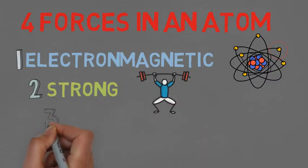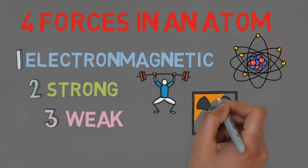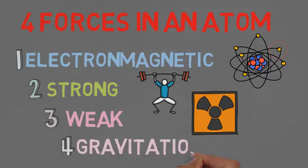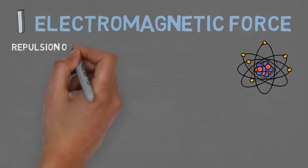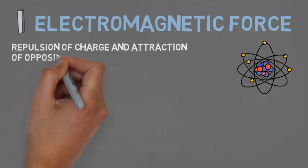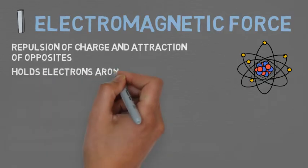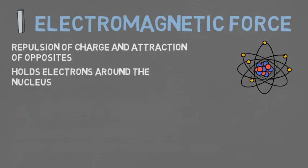Firstly, we will look at the electromagnetic force, which combines the effects of electrical charge and magnetism. It results from the repulsion of charges and the attraction of opposites. It is the force that holds the electrons around the nucleus in the electron shell. This occurs as the center of the atom is positively charged and attracts the negatively charged electrons.